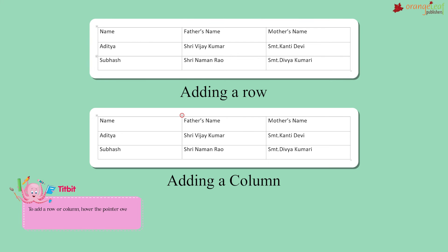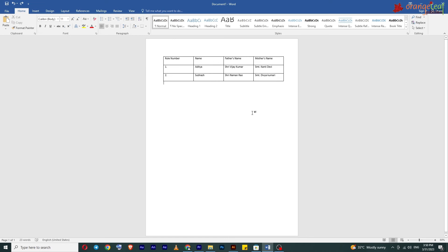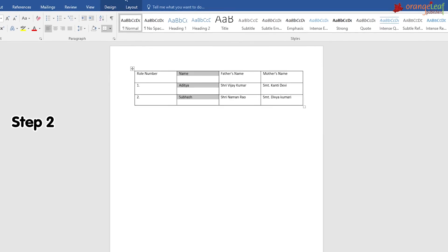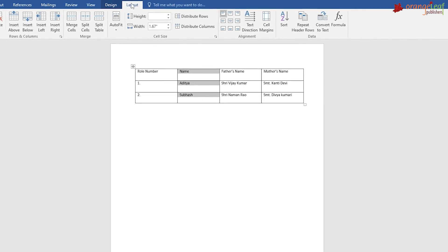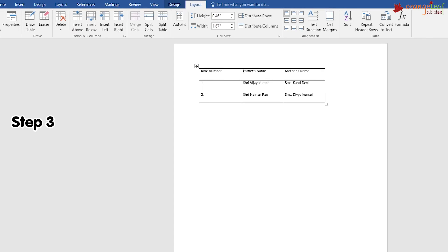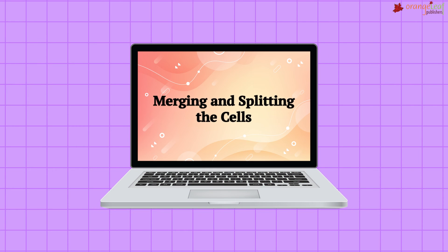Trivia: to add a row or column, hover the pointer over the margins of the cell where you want to add, then click the plus sign that appears. Deleting rows and columns: Step 1: Select the rows or columns you want to delete. Step 2: Click on the Layout tab under Table Tools. Step 3: From the Rows and Columns group, click the Delete button — a drop-down menu appears. Click the desired option. Quick tip: press Shift + Delete to delete selected rows and columns.